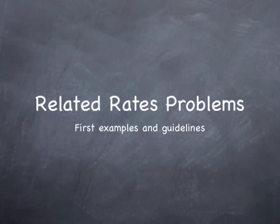We're going to now turn to a class of problems referred to as related rates problems. In all of the natural sciences and many of the social and behavioral sciences, quantities that are related but vary with time are encountered. Problems involving rates of change of related variables are referred to as related rates problems. In such problems, we usually want to find the rate of change of one of the variables at a given time, while the rates of change of the other variables are known.